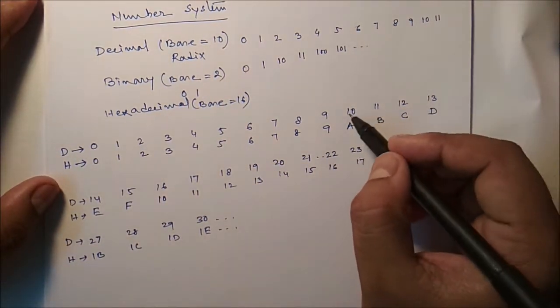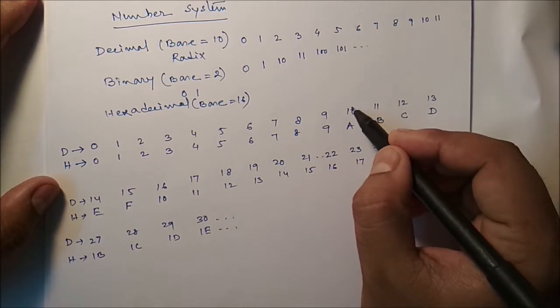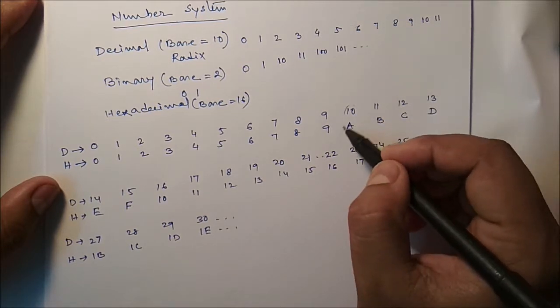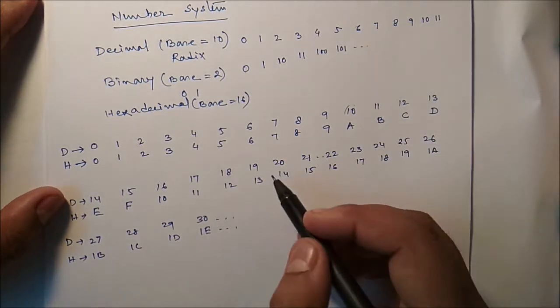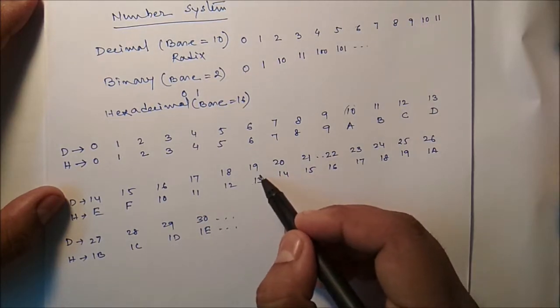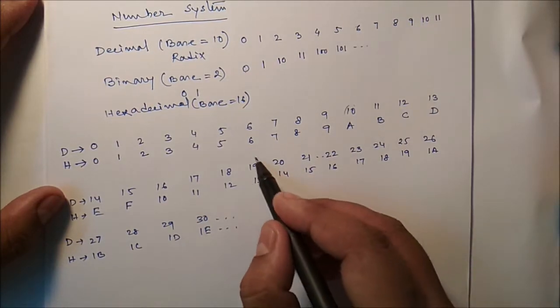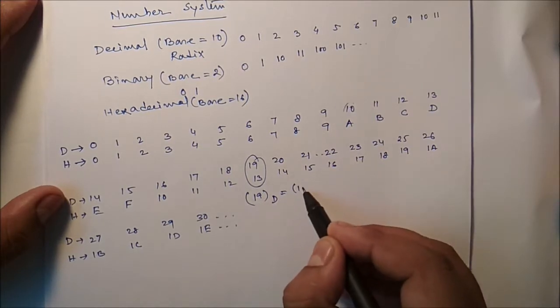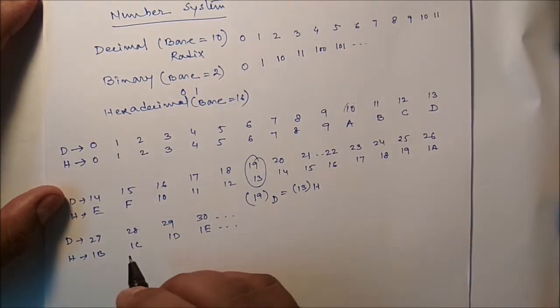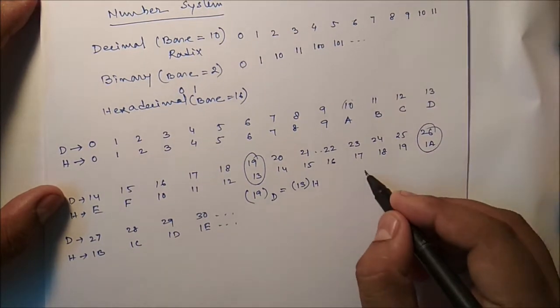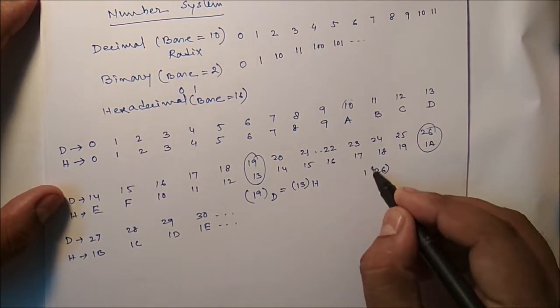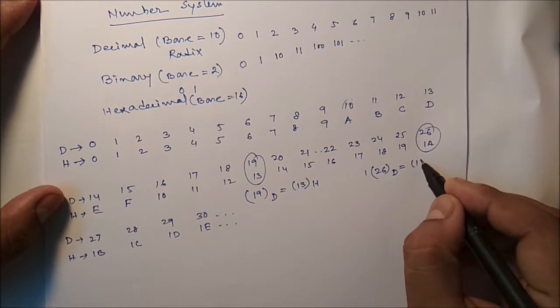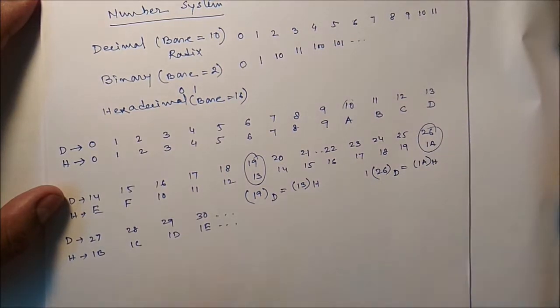So decimal 10, decimal 10 value is nothing but hexadecimal A value. Similarly, decimal 19 means hexadecimal 13. So we can say in this decimal 19 is equal to hexadecimal 13. Similarly, here 26 in decimal is equal to 1A in hexadecimal.